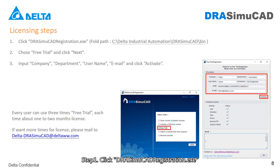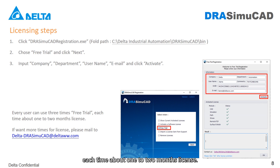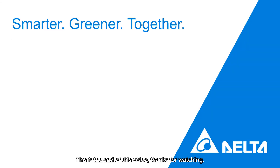Licensing Steps. Step 1: Click DI Simu CAD Registration. Step 2: Choose a free trial and click Next. Step 3: Input Company, Department, User Name, and Email, then click Activate. Every user can use a free trial three times, each time approximately one to two months license. If you need more time for a license, please email DELTADI Simu CAD at DELTAWWW.COM. This is the end of this video. Thanks for watching.